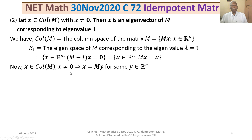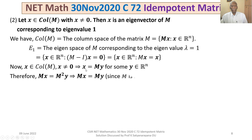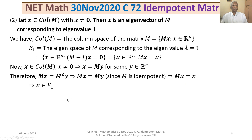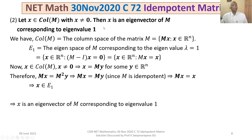Since x = My for some y ∈ ℝⁿ and pre-multiplying by M gives Mx = M²y = My = x, we get Mx = x, meaning x ∈ E₁. So x belonging to the column space of M implies x ∈ E₁, meaning x is an eigenvector of M for eigenvalue 1. Therefore Option 2 is true.